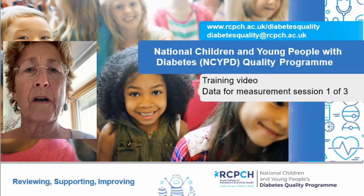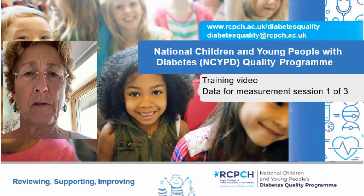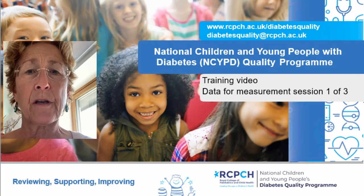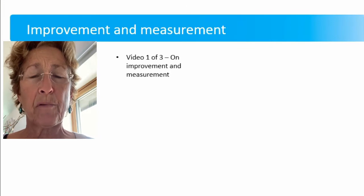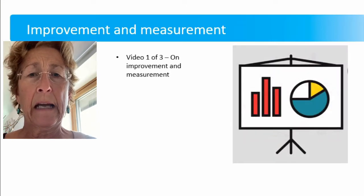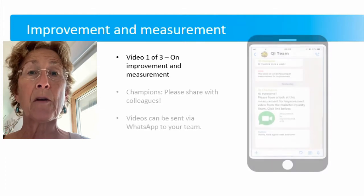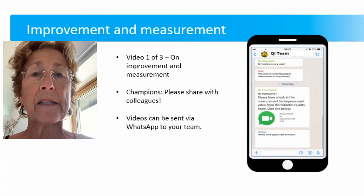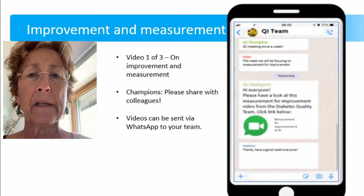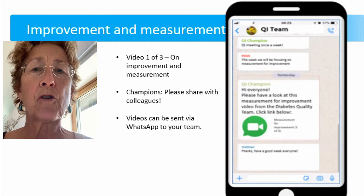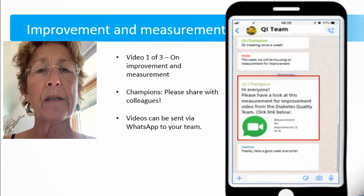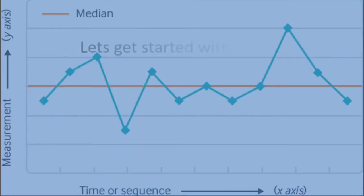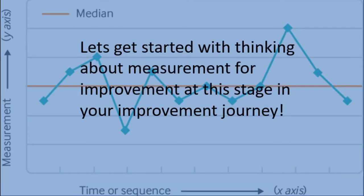This is the first of a short series of videos which I'm going to make just under five minutes long, five megabytes on improvement and measurement. And the aim is that you'll be able to pick it up as the champion of your group and then send it easily through the WhatsApp system that you've got to all the people in your team. And it's really just to prompt you into thinking about measurement for improvement at this critical stage in your improvement journey.